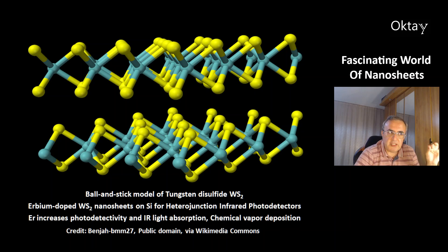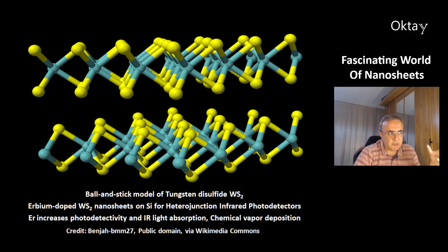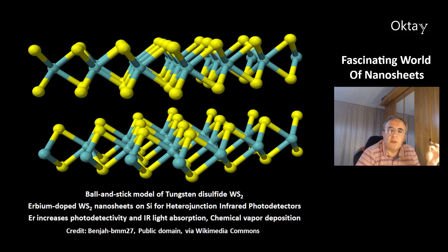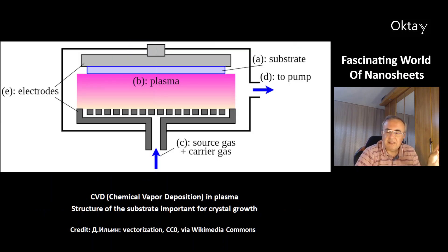Another example of nanosheets: this is the ball-and-stick model of tungsten disulfide, WS2. The blue atoms are tungsten and the yellow atoms are sulfur. You can make aluminum-doped tungsten disulfide nanosheets from silicon for heterojunction infrared photodetectors — the aluminum doping increases the photodetectivity and infrared light absorption. The method to make this compound is chemical vapor deposition, CVD.